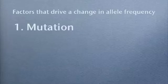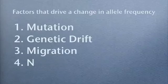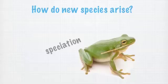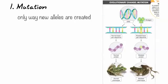Factors that drive a change in allele frequency: mutation, genetic drift, migration, and natural selection. Starting with mutation — mutation is basically when a brand new allele enters the gene pool. This is the first way new alleles are created. You need something called a mutagen, usually like UV rays or X-rays, or just a random change in DNA because DNA actually makes mistakes every now and then.